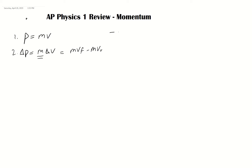A couple of key concepts come along with momentum. It's very important to realize that momentum is a vector, and that has two big consequences. First, the direction matters. Second, the sign of momentum matters, and any angles involved matter a lot as well.